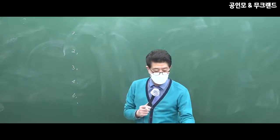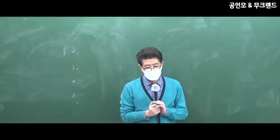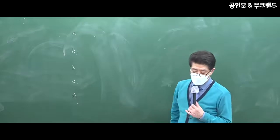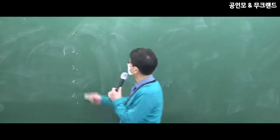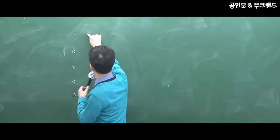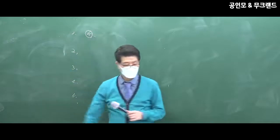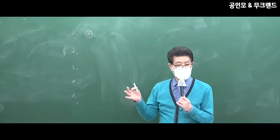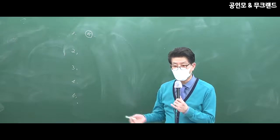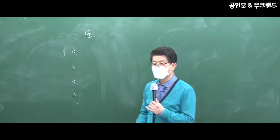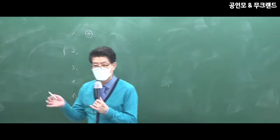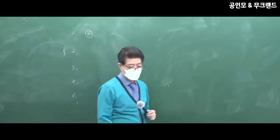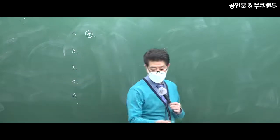1번으로 들어가요. 양도에 해당하는 것은 답이 5번입니다. 채무불이행으로 변제에 충당되면 양도로 본다. 네 글자로 대물변제라고 합니다. 빚 대신에 물건으로 갚은 것이죠. 나머지는 다 양도가 아니에요.